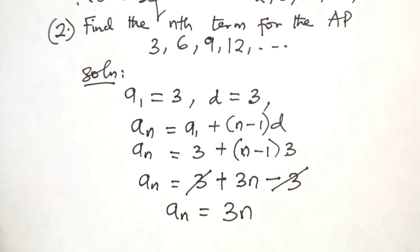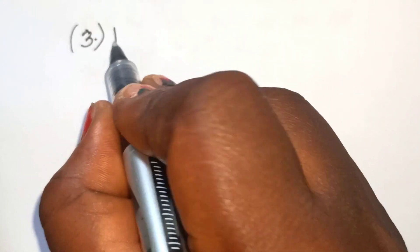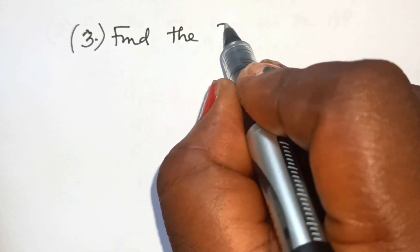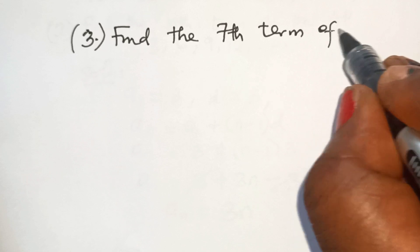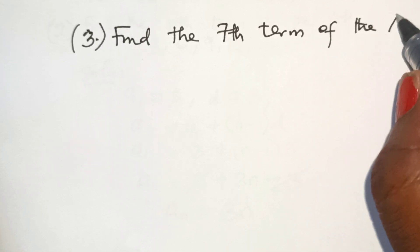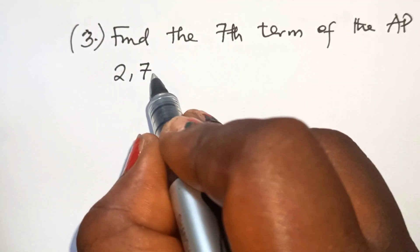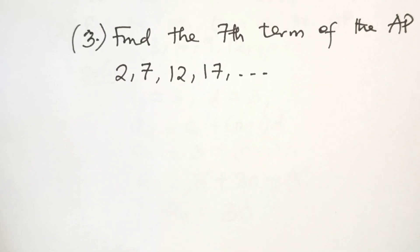Now we have a third example. Example 3. Find the seventh term of the AP 2, 7, 12, 17, and so on.